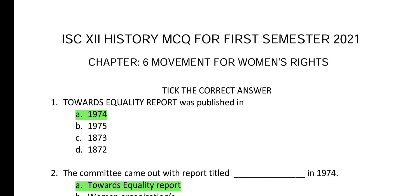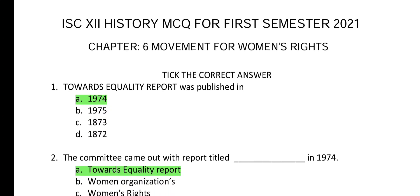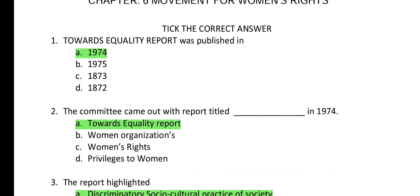Hello dear students. Once again I am back with another set of ISE class 12 history MCQ from chapter number 6, that is Movement for Women's Rights. All together 33 questions are here in this MCQ. So let's go through it one by one.